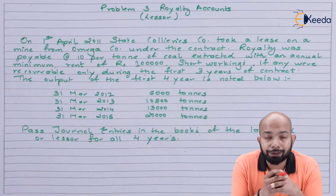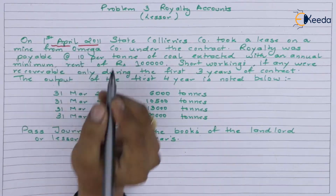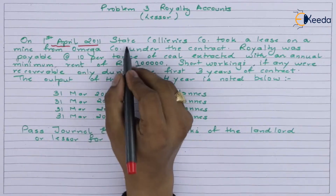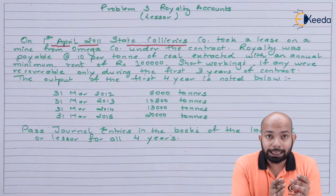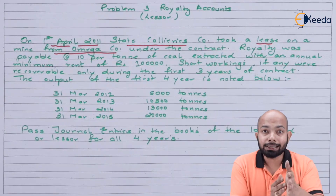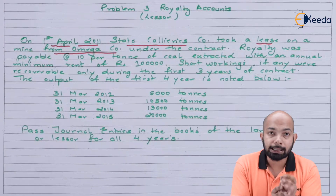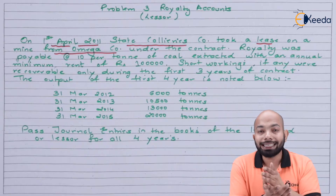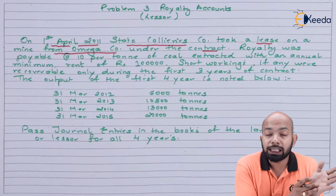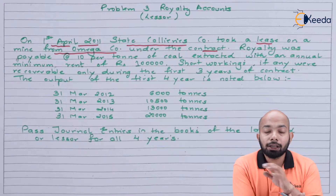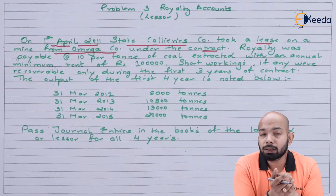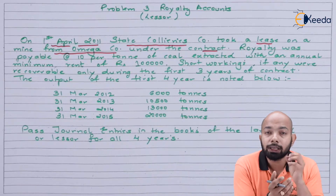So the question has been mentioned here for your reference. On 1st of April 2011, State Collieries Company Limited took on lease a mine from Omega Company. That means Omega Company is the lessor and State Collieries Company Limited is the lessee. Royalty was payable at the rate of ₹10 per ton — whatever tons of output come out, ₹10 per ton is the royalty payable to the landlord, Omega Company Limited.